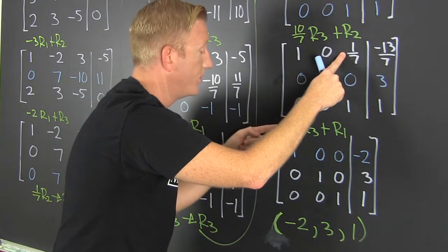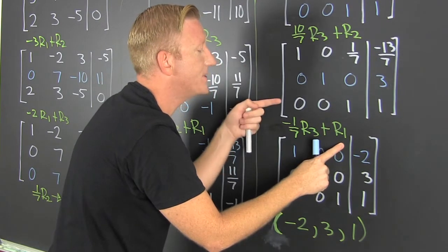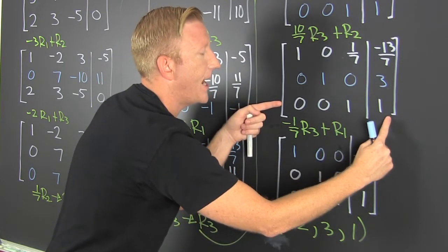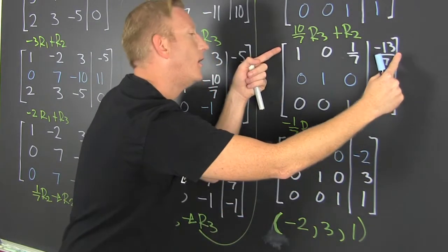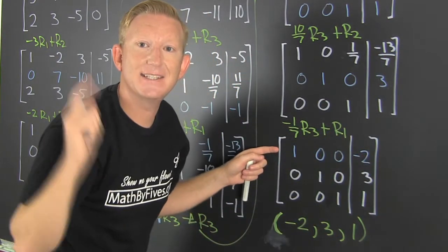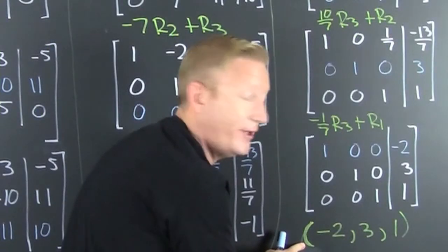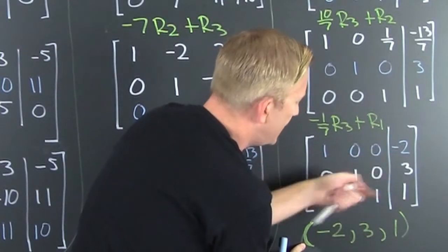Additive inverse. Multiply it by row 3 and then add it to row 1. So I do minus 1 seventh row 3, add it to row 1. So then when I do that, I get this. But now, that last and most important step. I need to take that and I need to write it as a point. What's my point? X, Y, Z.